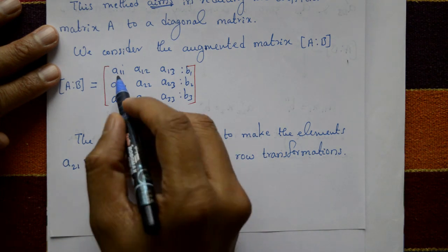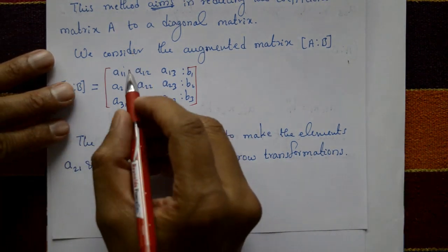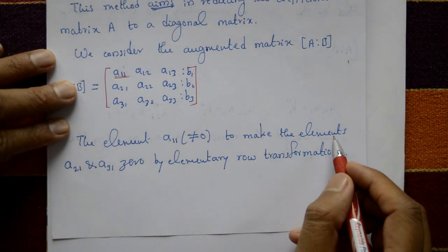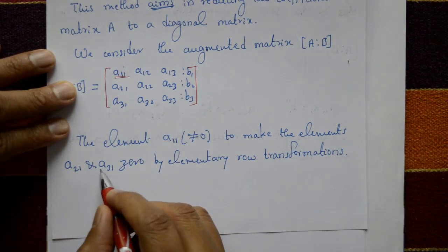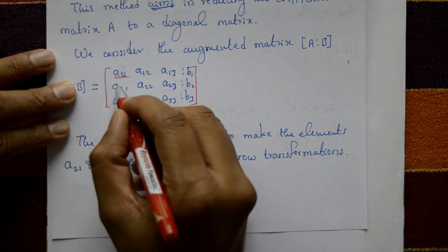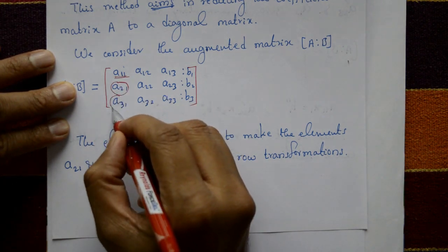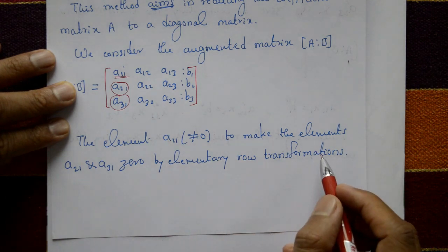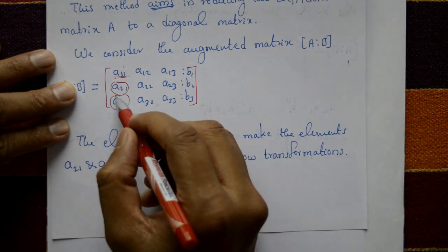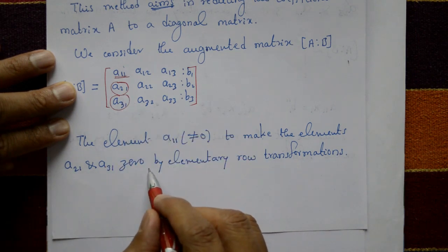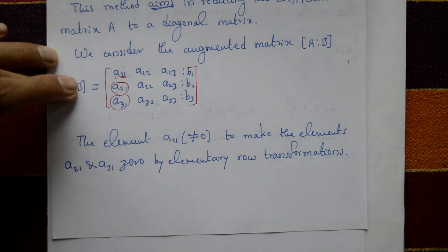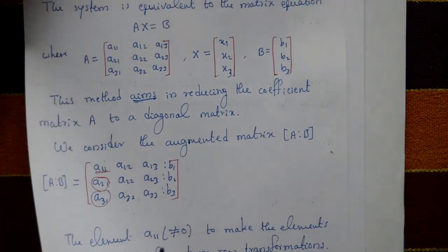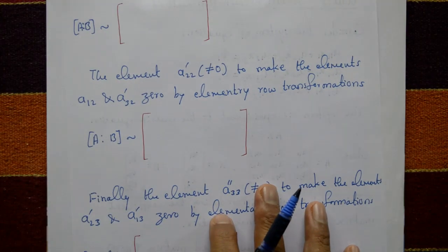The first step: the element a11 must not be equal to zero. Using this pivot, we make elements a21 and a31 equal to zero by applying elementary row transformations.